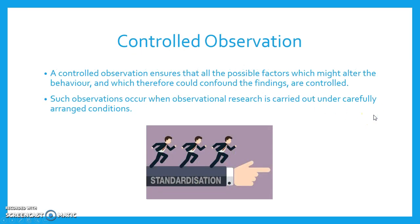Controlled observations. A controlled observation ensures that all the possible factors which might alter the behaviour and which could therefore confound the findings are controlled. Such observations occur when observational research is carried out under carefully arranged conditions.